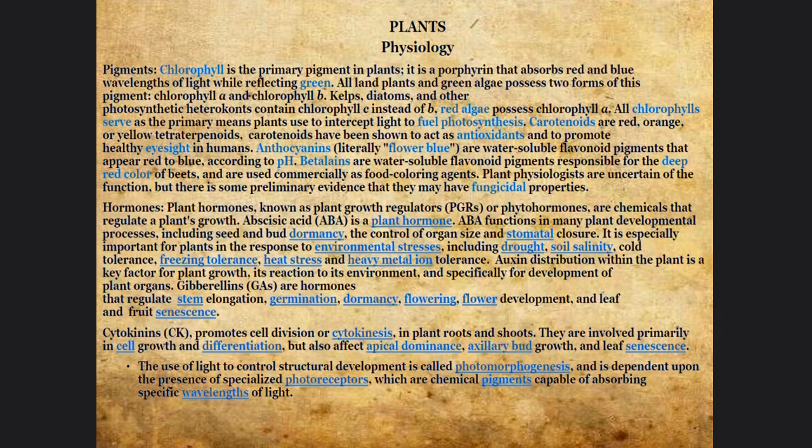Some plants have carotenoids — like carrots — which are perfect for eyesight improvement and antioxidants. Then we have anthocyanins, the blue color, and the color gradient depends on the pH.